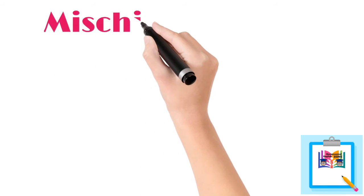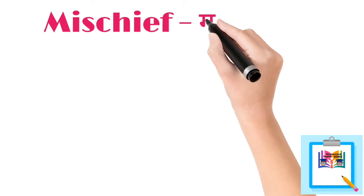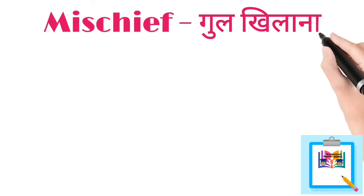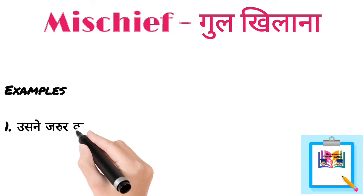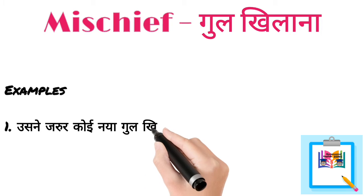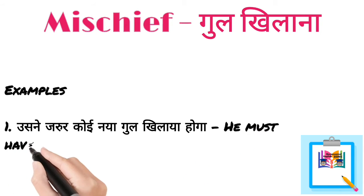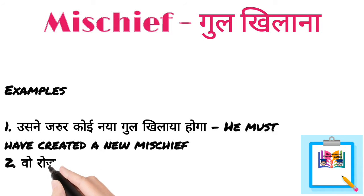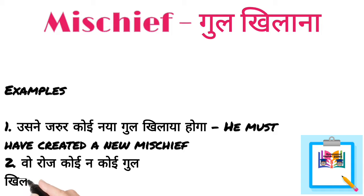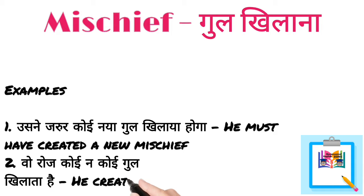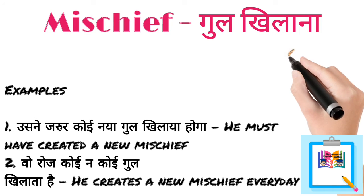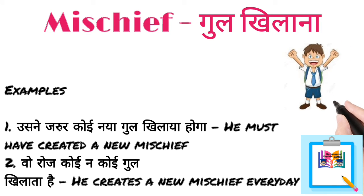Mischief — gul khilana. Examples: Number one — Usne zarur koi naya gul khilaaya hoga — He must have created a new mischief. Number two — Wo roze koi na koi gul khilata hai — He creates a new mischief every day.